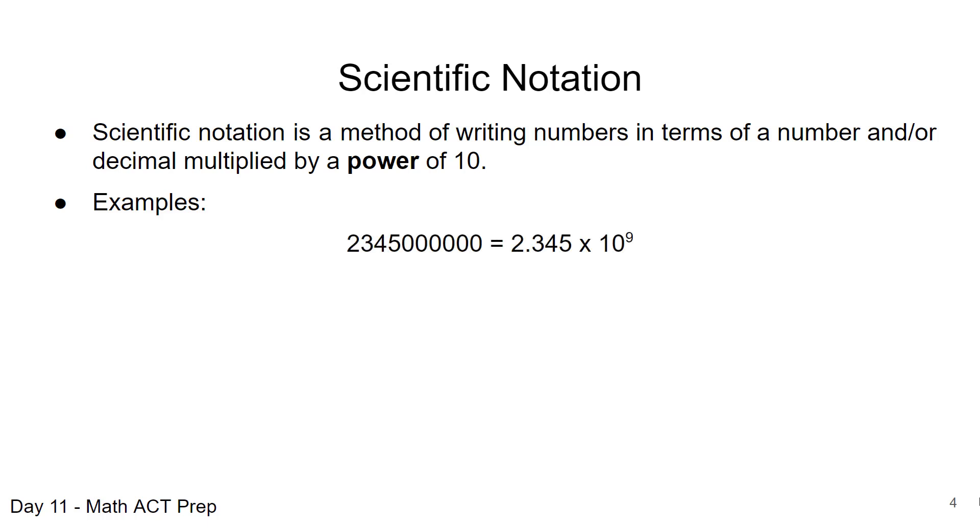So here's a couple of examples. This is a really big number. That's the number 2,345,000,000. So I noticed that there are six zeros in that. Sometimes when we're writing all those zeros, it's very easy to leave a zero out and that changes what the number is. So scientific notation helps us to kind of cap that a little bit. And so we would rewrite that as 2.345 times 10 to the ninth power. And we'll talk about how to get that exponent on that power of 10.